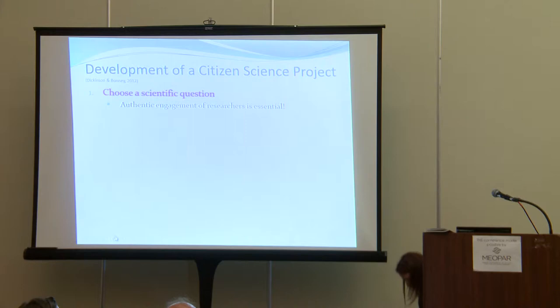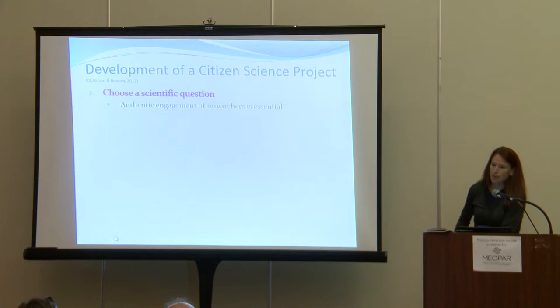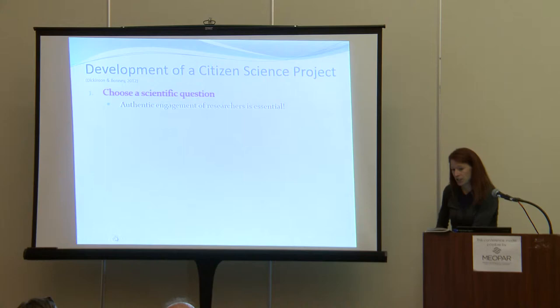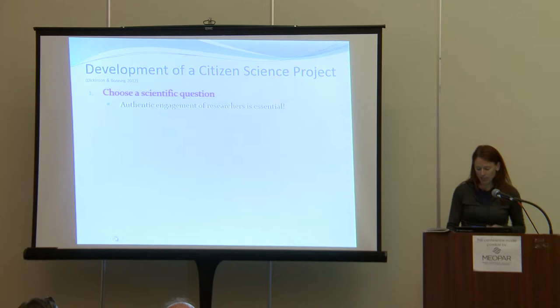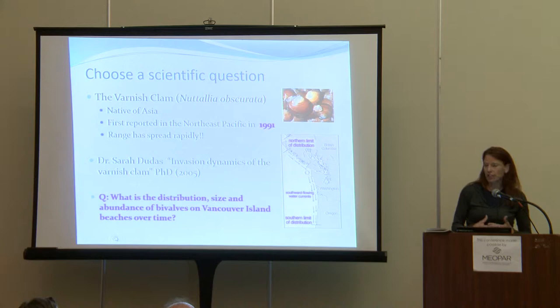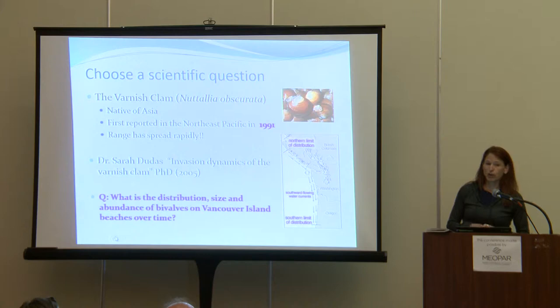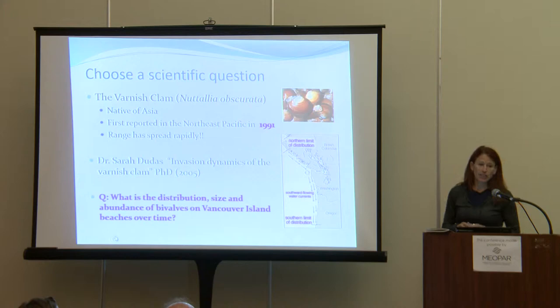They suggest first choosing a scientific question and highlight — as do other researchers — that it's extremely important to have authentic engagement of researchers. You can't create a citizen science project that doesn't have interest in publishing results. So our main player is the varnished clam, which is native to Asia — Japan, Korea, and China — and was first reported in the Northeast Pacific in 1991. It was thought to have arrived in ballast water of shipping vessels in Vancouver Harbor, and its range has expanded shockingly quickly along the currents, both north and south.